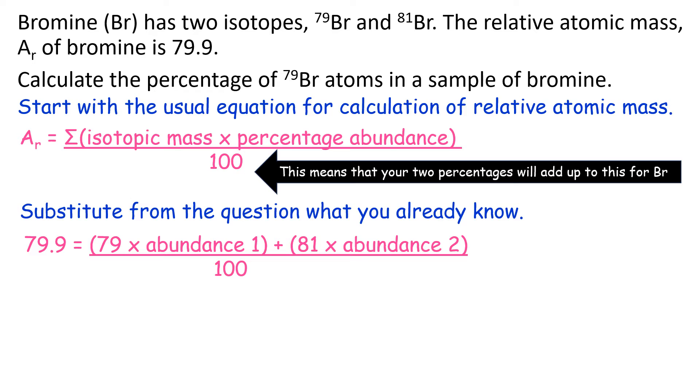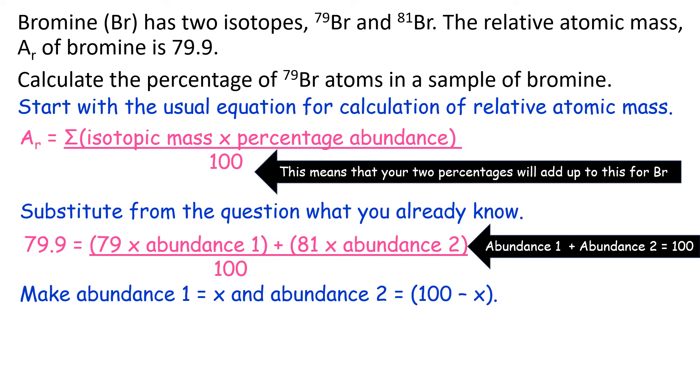For example, we know that the relative atomic mass is 79.9, so you say 79 times abundance 1 plus 81 times abundance 2. Now we don't know what those abundances are, but we know that they add up to 100.